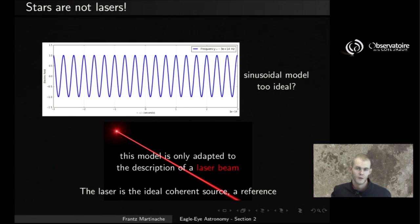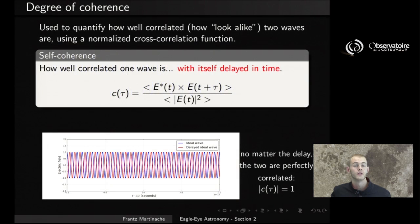In particular, when we look at sources that are not lasers, we're trying to compare them to lasers. And to do this, we're using a quantity called the degree of coherence. This is something that we use to quantify how well correlated or how look-alike two waves or two signals are. And the way we do this is by using a normalized cross-correlation function.